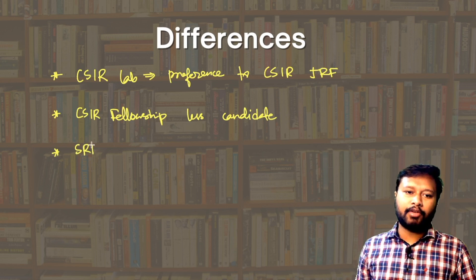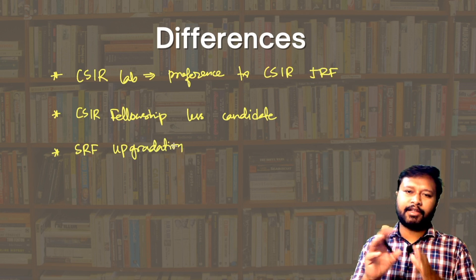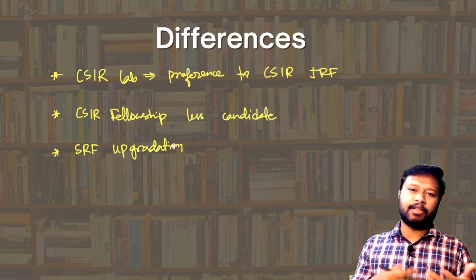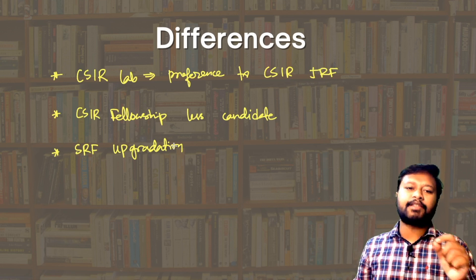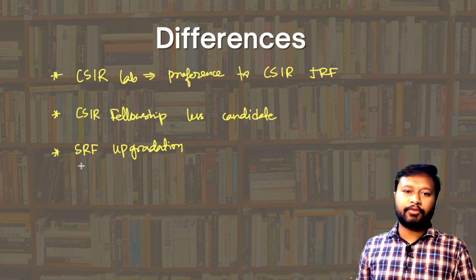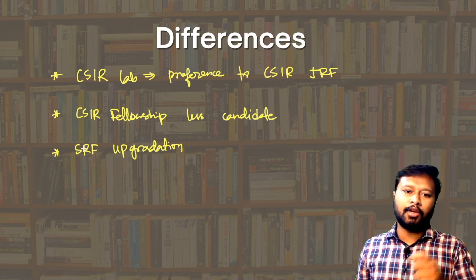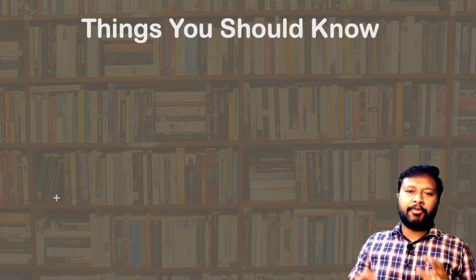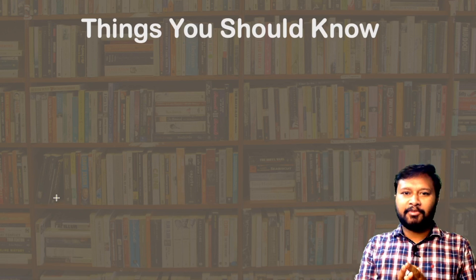The third difference appears during SRF upgradation. After two years of your PhD or research, you can upgrade from JRF to SRF — Senior Research Fellow. The process of SRF upgradation is slightly different for UGC JRF compared to CSIR JRF, and those details will be discussed in a separate video.